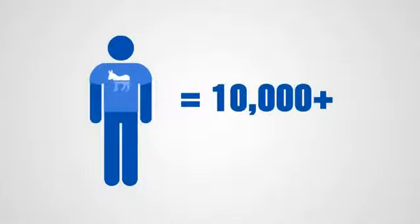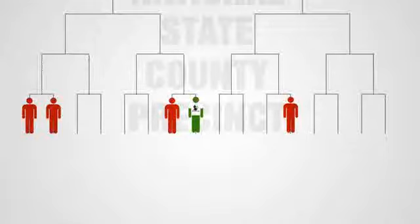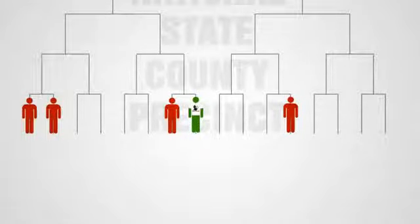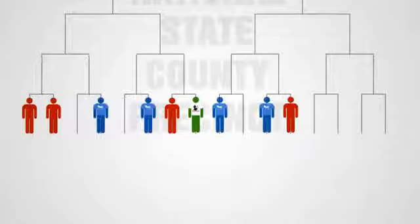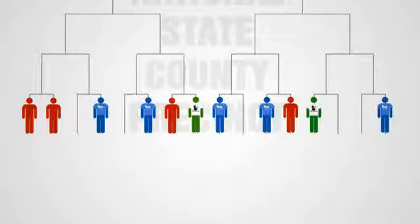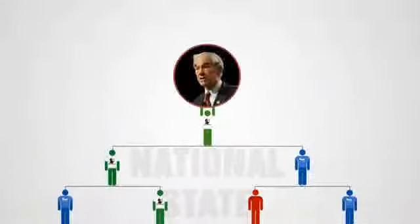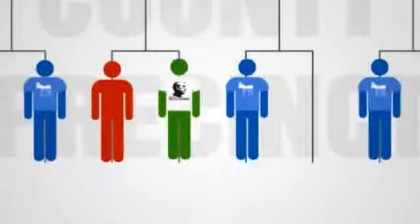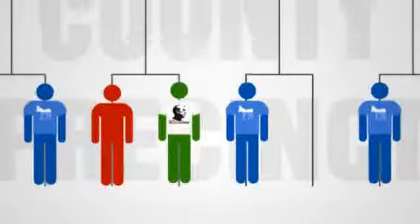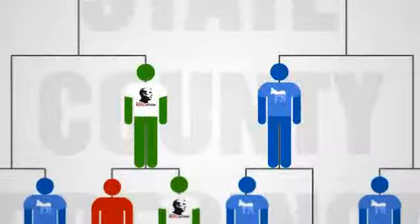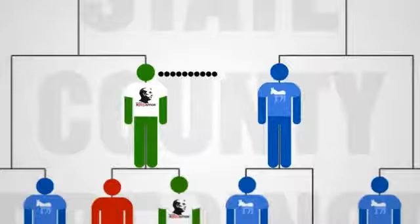Often, a Republican neighborhood caucus will have no turnout, especially in more liberal parts of the country. This is a great opportunity for blue Republicans to have a massive impact. Just a handful of blue Republicans in the right places will get Ron Paul the nomination. Remember, in these situations you will have to vote yourself to be the delegate to advance to the county level and then network with the Ron Paul people there.